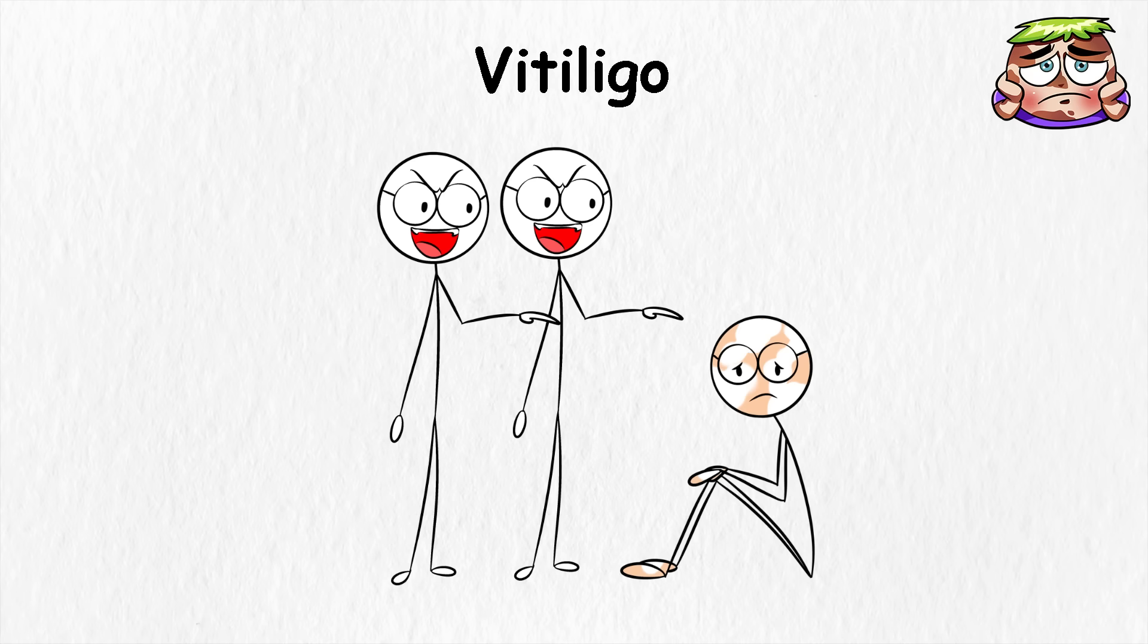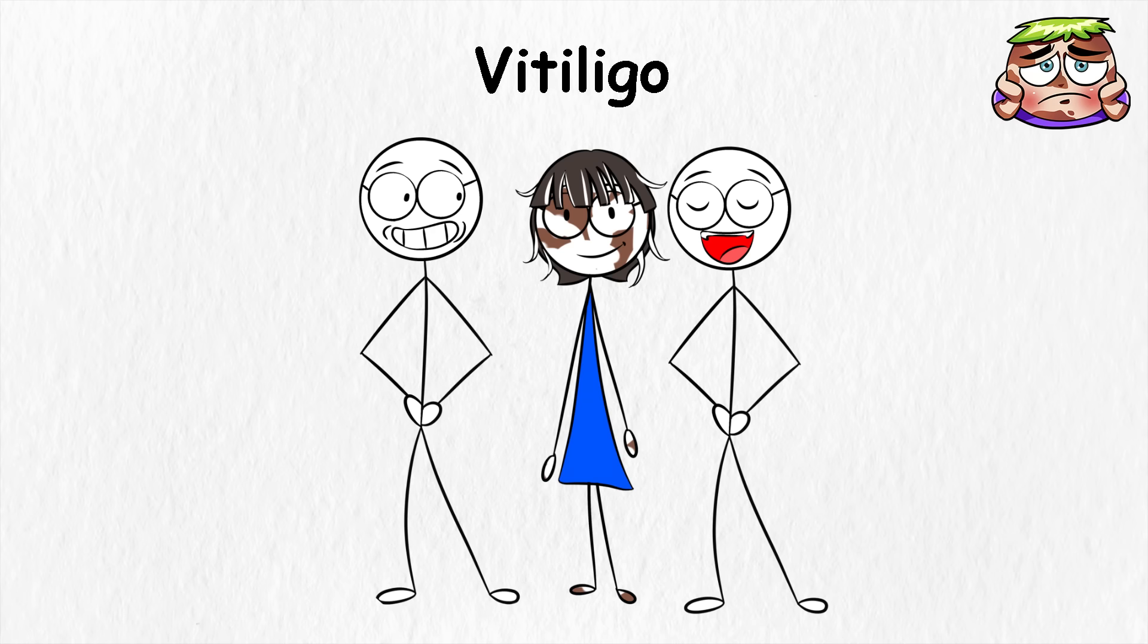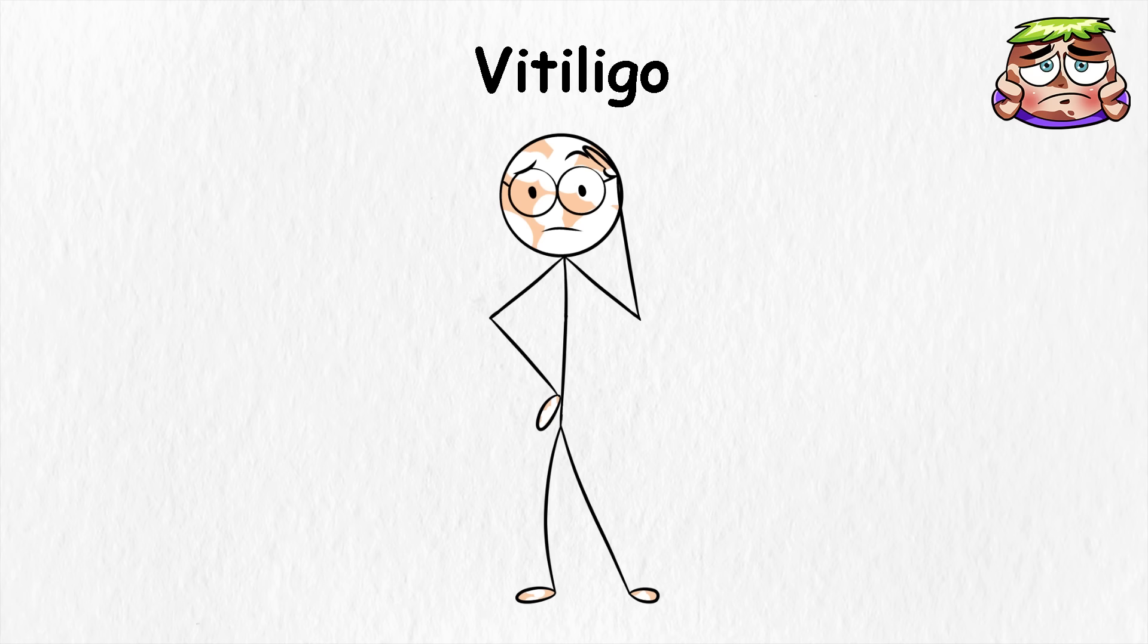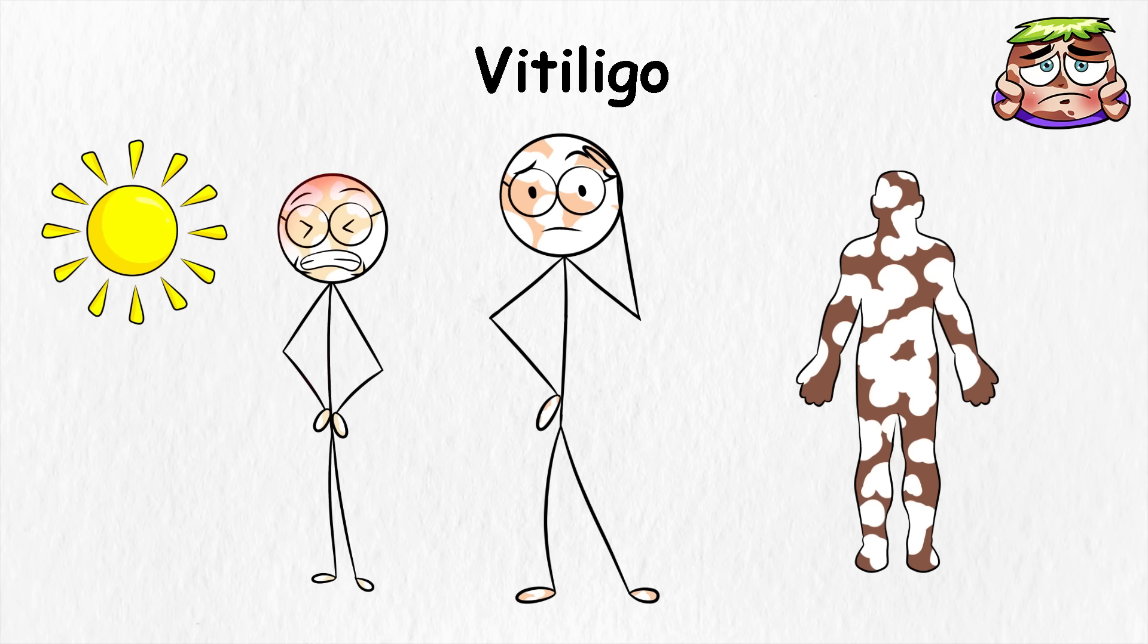In the past, vitiligo often came with stigma or unfair myths. Today, more people with it are visible in media and fashion, which helps others feel less alone. That change also shows how much awareness has grown. Vitiligo makes one thing clear, like the skin color can usually change. When pigment cells stop doing their job, the skin shifts in its look and even handles sunlight differently.